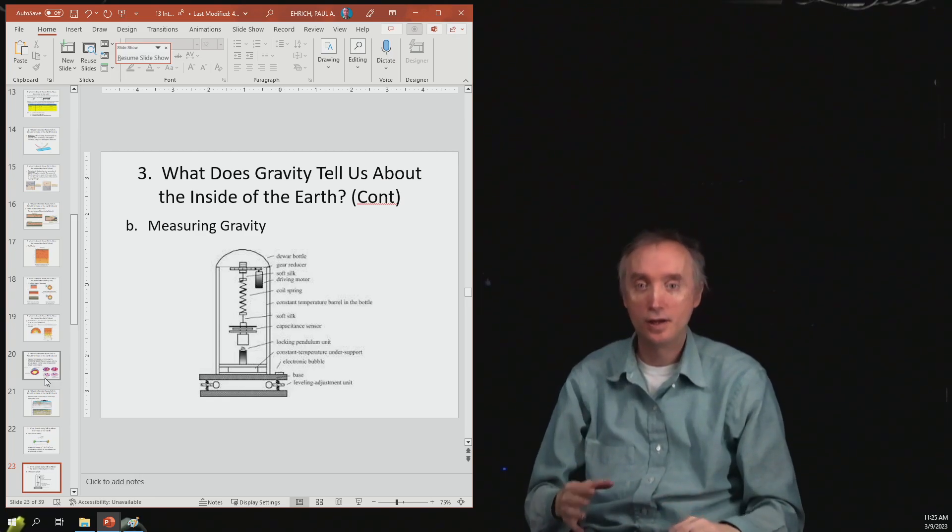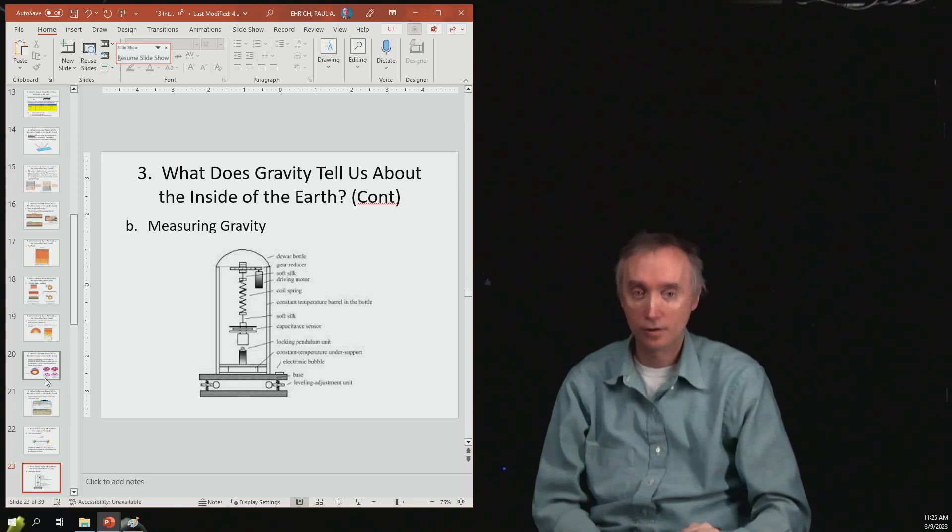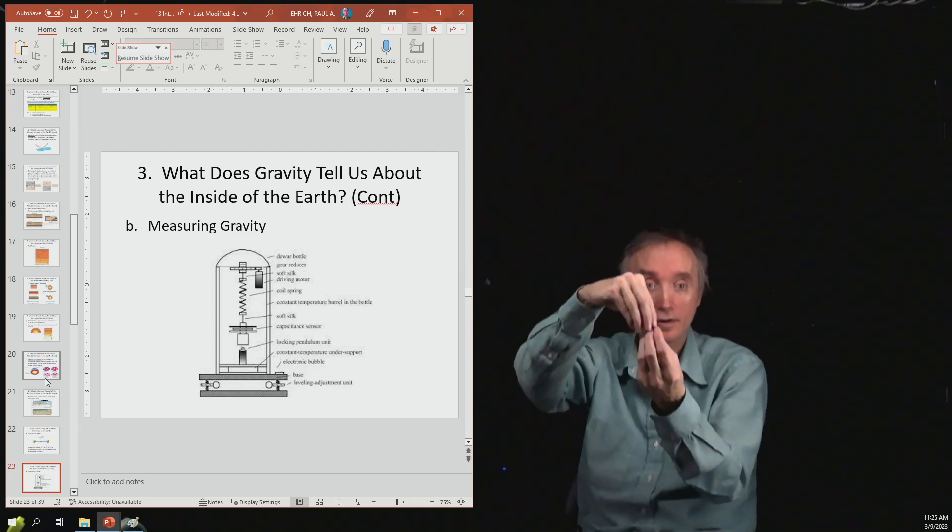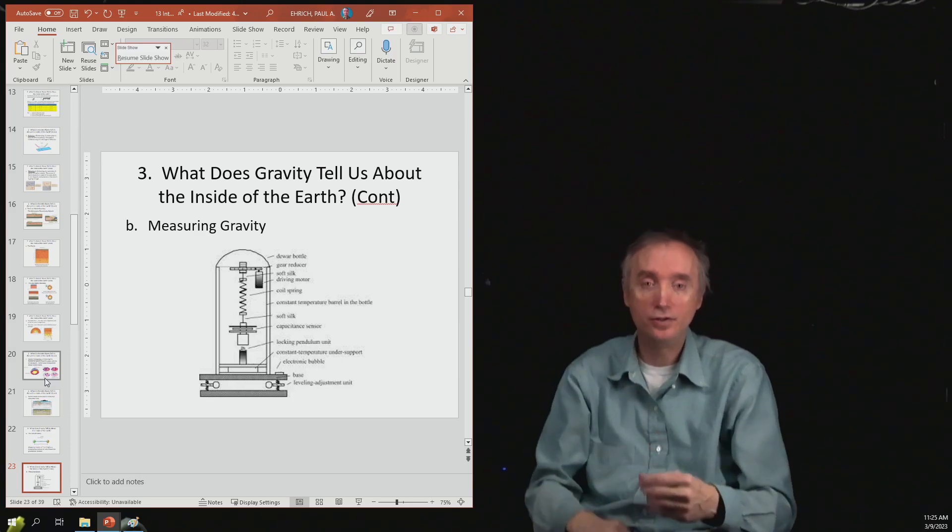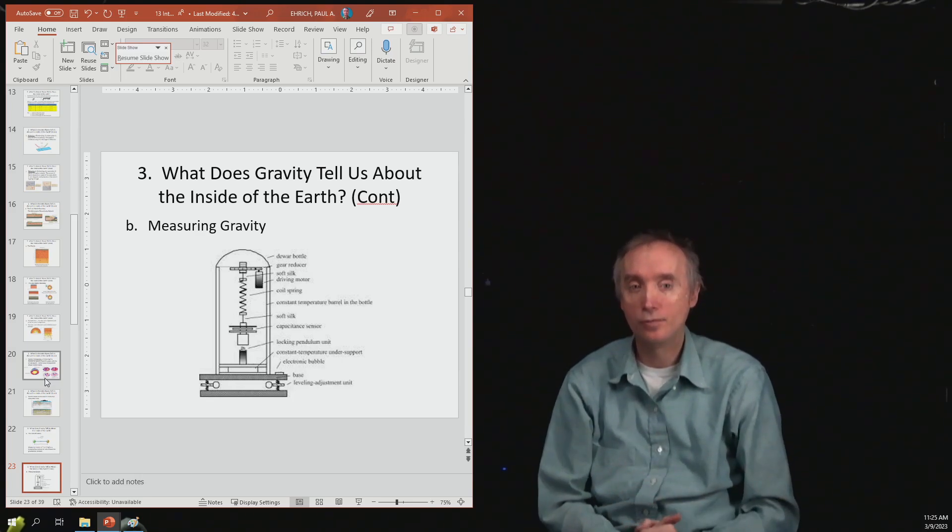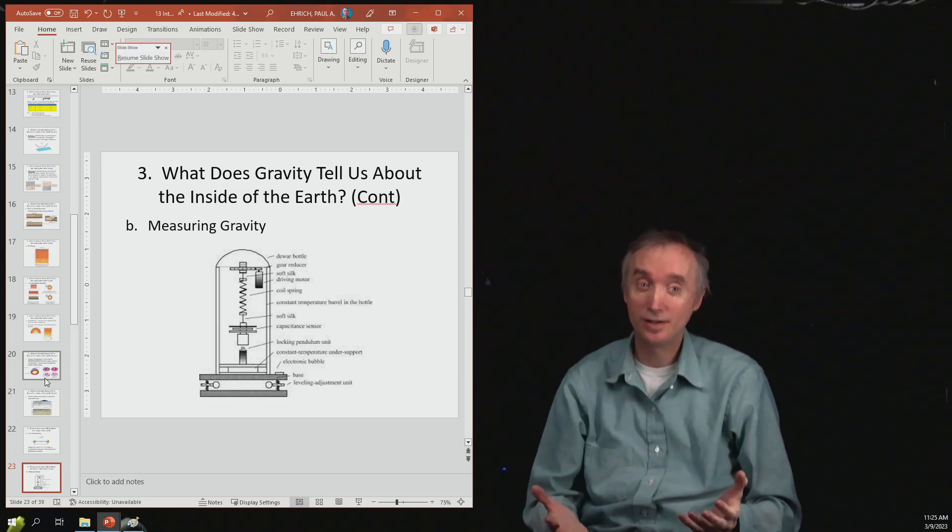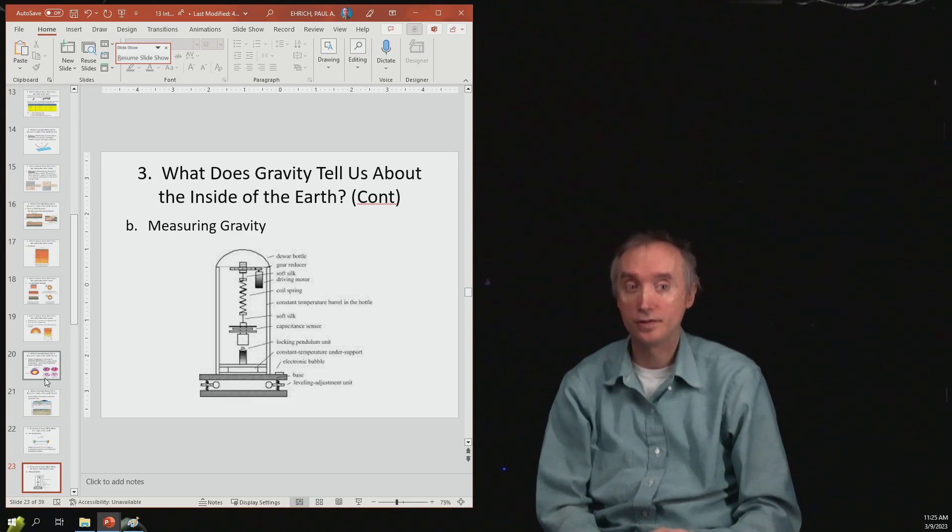And then somehow that spring is going to be attached to a pin or something so that it can tell you how far did the spring stretch. And then based on that, you can get an idea for how much mass was underneath that weight that was suspended by the spring. So that's essentially how a gravitometer is going to work.